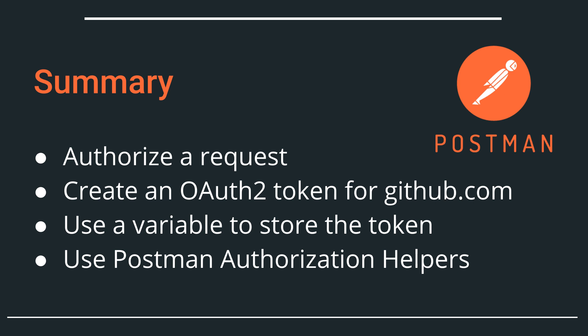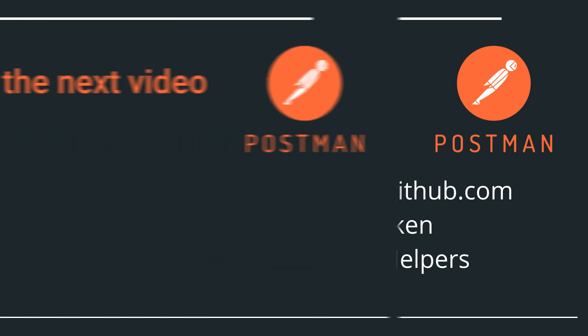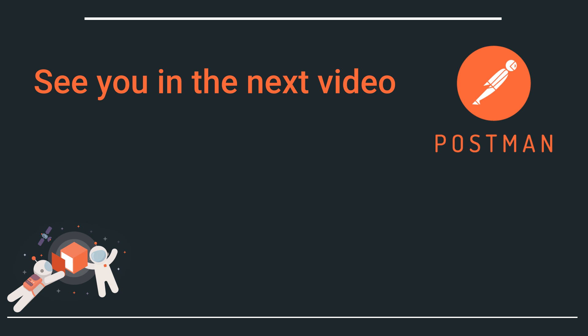To sum everything up, we had a look at how you can authorize a request in Postman. We did that by creating an OAuth2 token within the GitHub interface and used that token as Bearer authentication in Postman using one of the Postman authentication helpers. If you have any issues getting this to run, make sure to take a quick look at the video description for some troubleshooting ideas, or feel free to post a comment in the section below. See you in the next video.